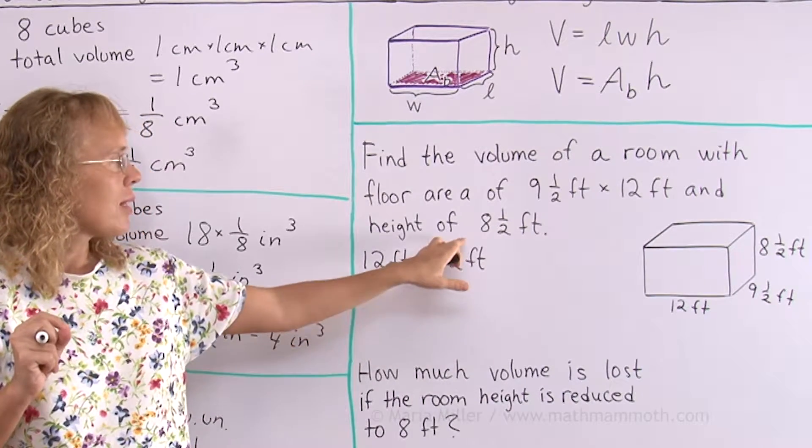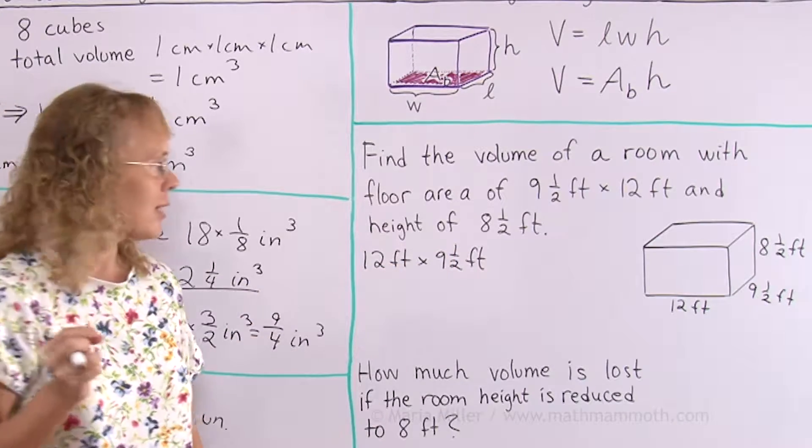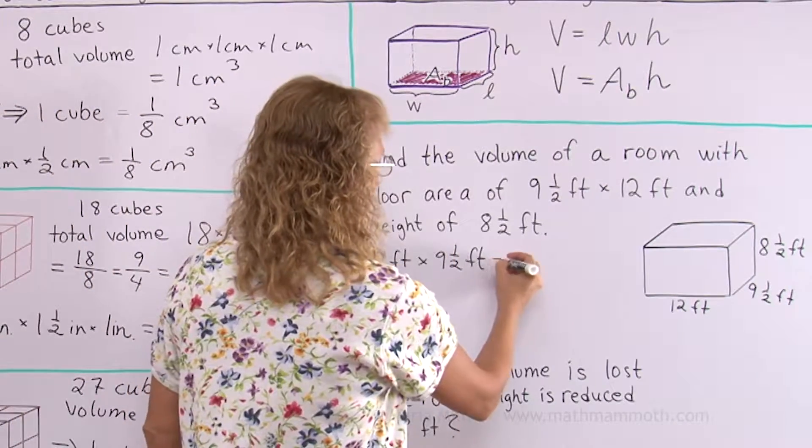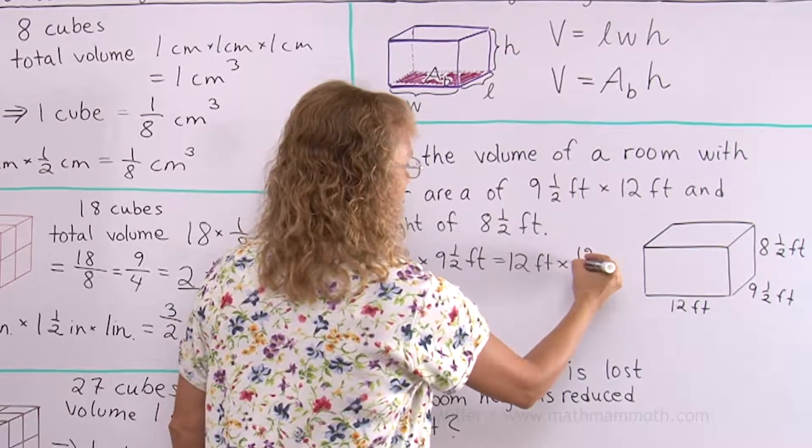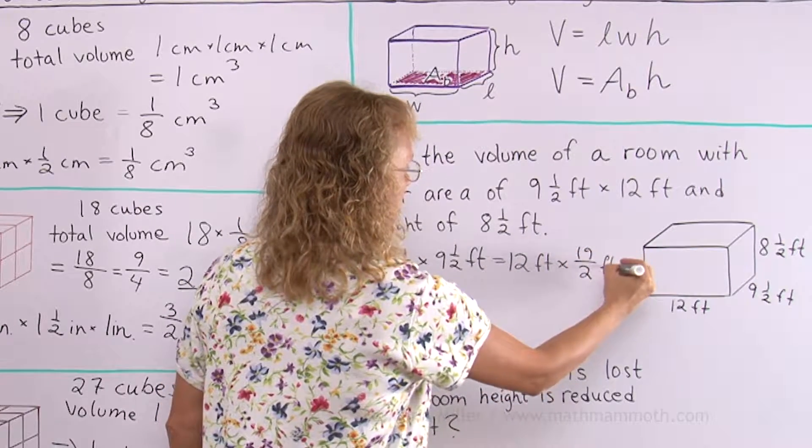So we get 12 feet times 19 over 2 feet. And now here in this expression, the 12 times 19 and then we get that is divided by 2.